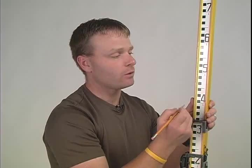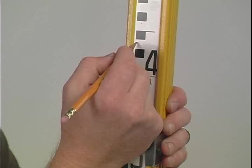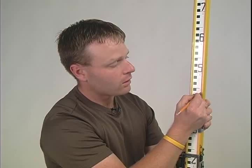With the level sighted on the rod, it is important to wave the rod back and forth, front to back, to ensure the level rod is plumb. Looking through the level, the crosshairs will pass through the rod at a certain point. We will indicate that on the rod by using the pencil and marking on the rod.